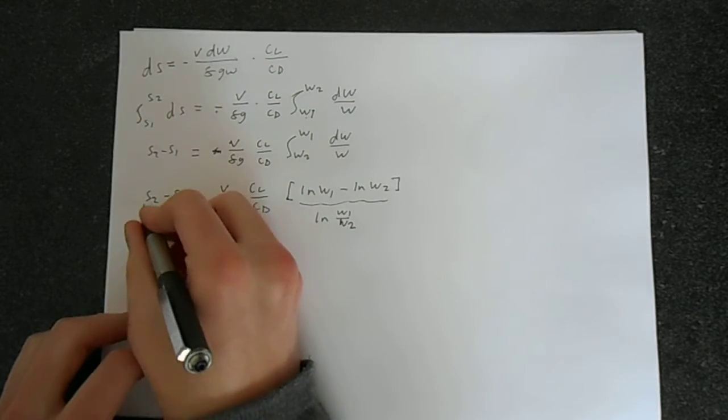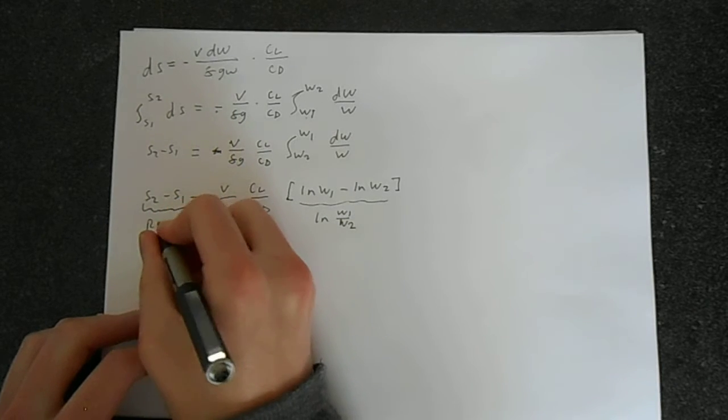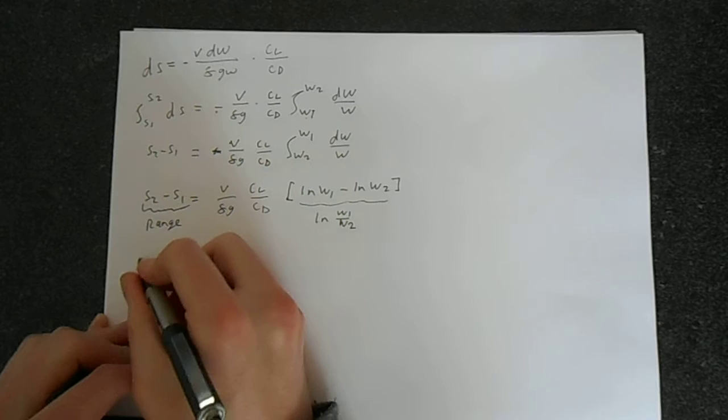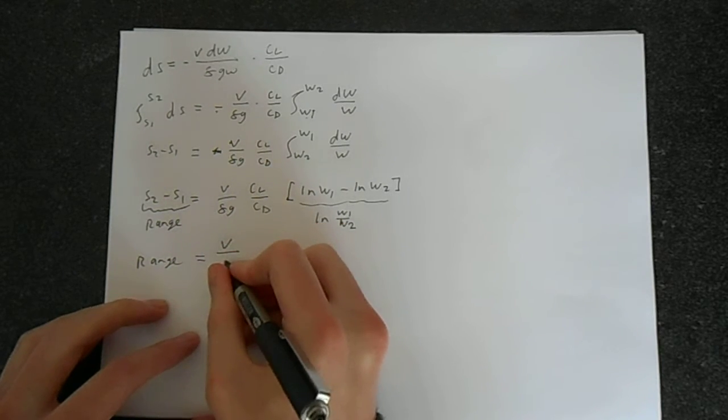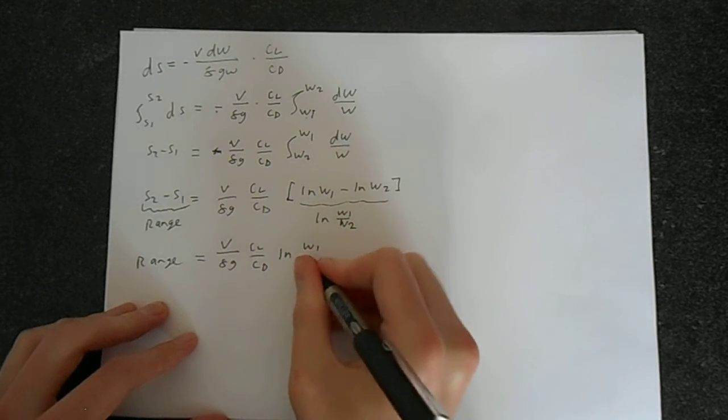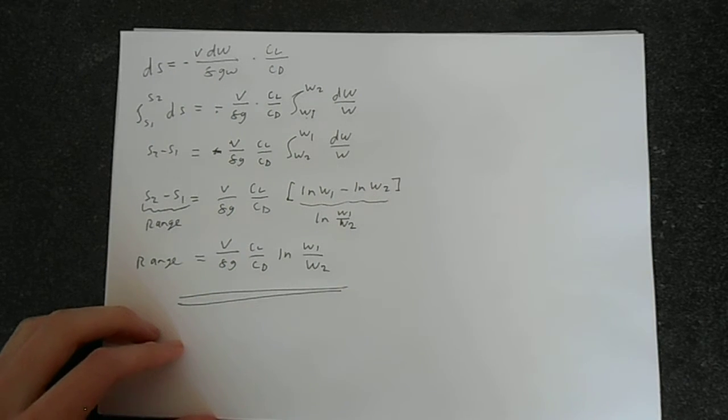Now, well, let's think about this. This is the distance between two points. What's the distance between two points? Well, in this case, it's a range. So, range is equal to v over f g times c_l over c_d times ln(W_1 over W_2). And that is your expression for the Breguet range equation.